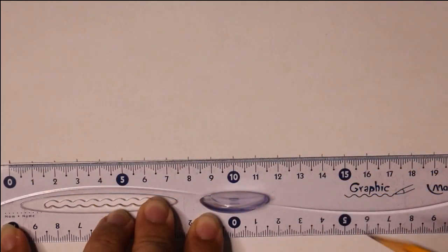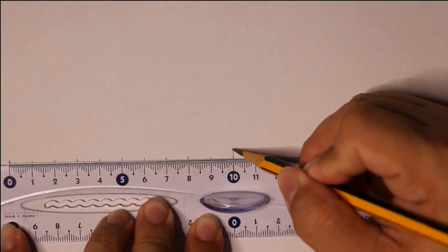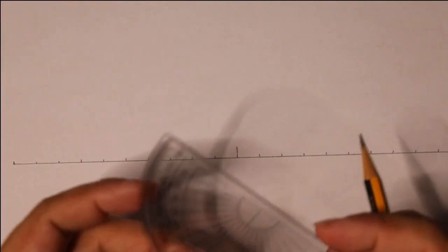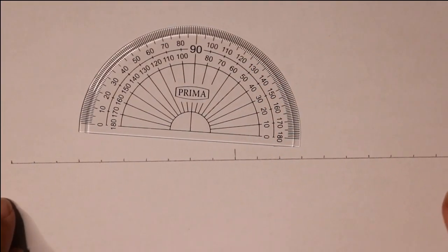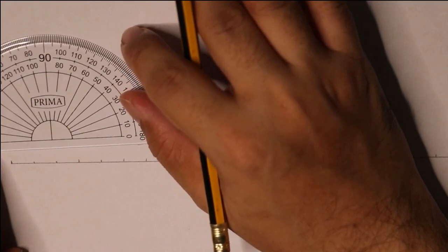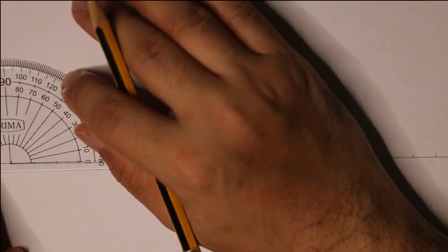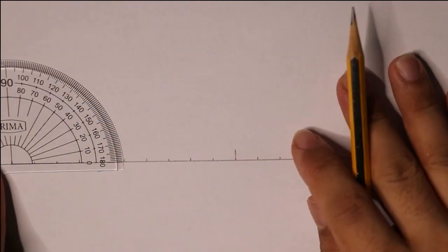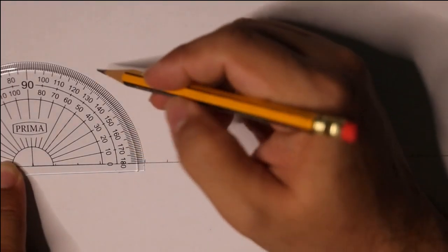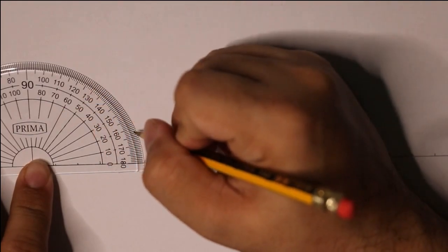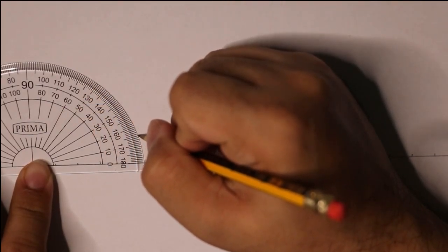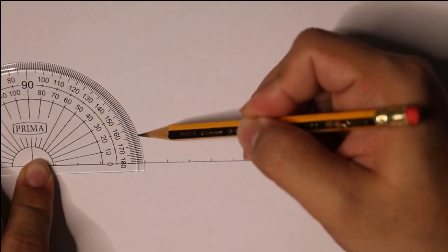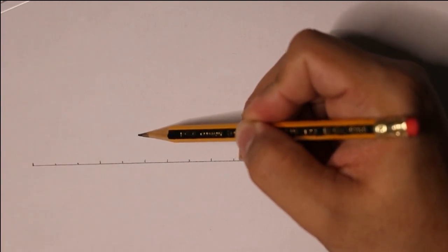From there, take your degree scale and place the degree scale where your launching position is at zero. From there read 15 degrees because that's the first angle where we launched our projectile. So that's 15 degrees right over here. Keep the pencil at 15 degrees.